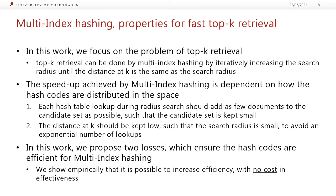So far, we have talked about how to use multi-index hashing for radius search — finding all documents within a given Hamming distance. But in this work, we focus on the problem of top-k retrieval, which can also be done using multi-index hashing. This is done by iteratively increasing the search radius until the distance at k is the same or smaller than the search radius, thereby ensuring we have found all documents in top-k. There is an exact incremental algorithm for expanding the candidate set when increasing the radius.